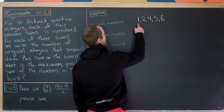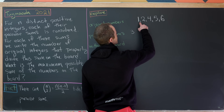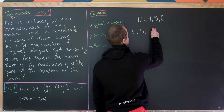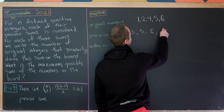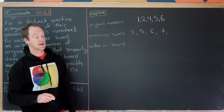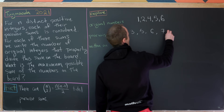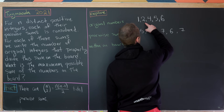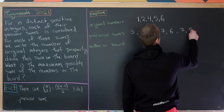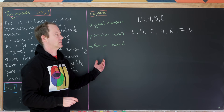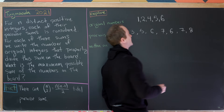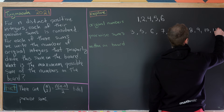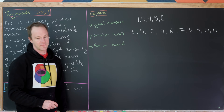First we have 1+2=3, then 1+4=5, then 1+5=6, then 1+6=7. That's all pairwise sums including 1. Then 2+4=6, 2+5=7, 2+6=8 — everything including 2 but not 1. Then 4+5=9, 4+6=10, and 5+6=11. Those are all of our pairwise sums.